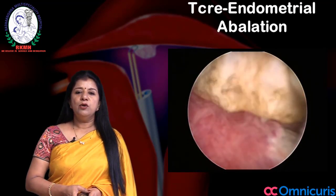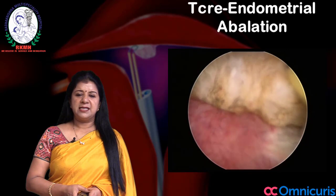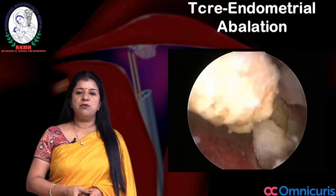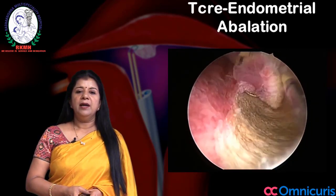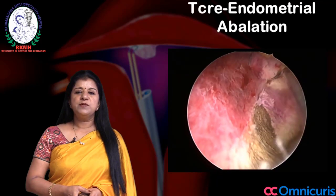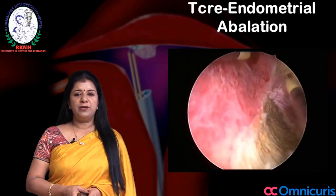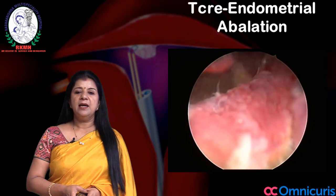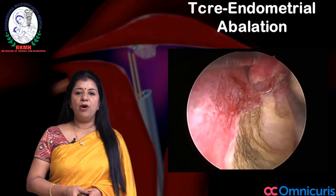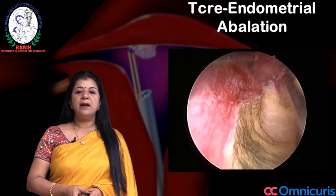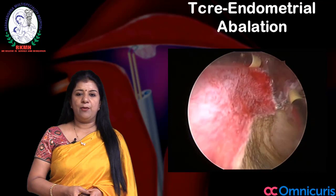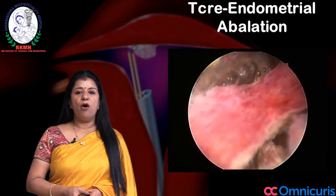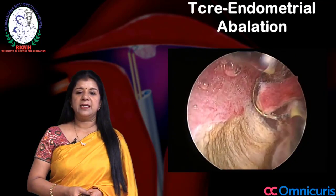Now you take a loop endometrial resection and then you take loops from the posterior wall. Here you can see these are the loops taken from the posterior wall of the uterus. There is a pattern in doing TCRE — you start from the posterior wall and remove all the bits from the posterior wall. You can go from middle to side or from one side left to right.